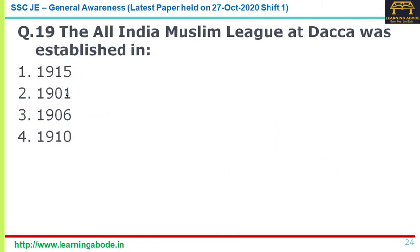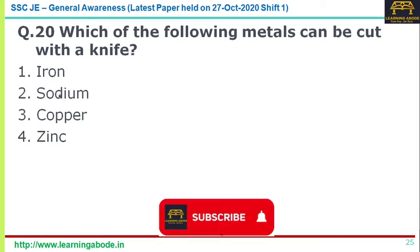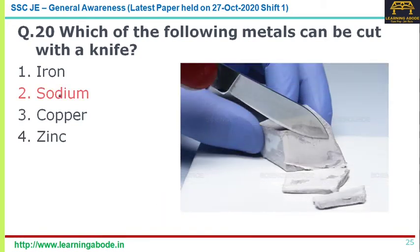Question nineteen: the All India Muslim League at Dhaka was established in 1906 — answer option three, 1906. Question twenty: which of the following metals can be cut with a knife? The answer is sodium — sodium can be cut with a knife.